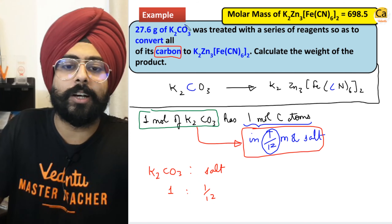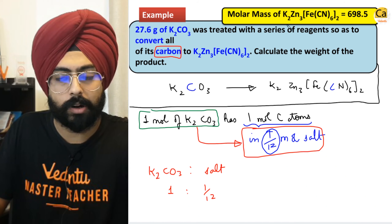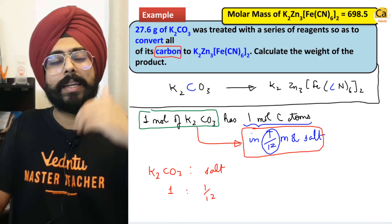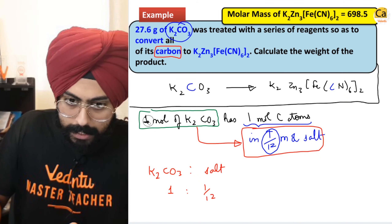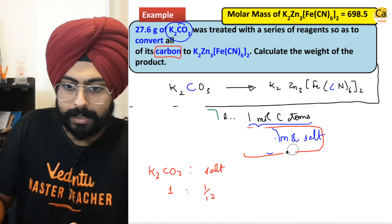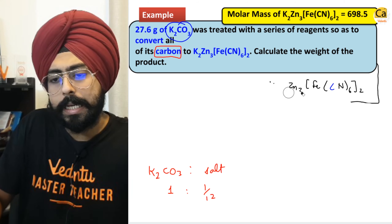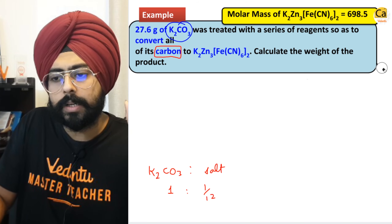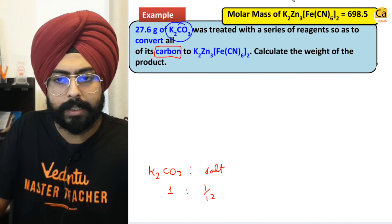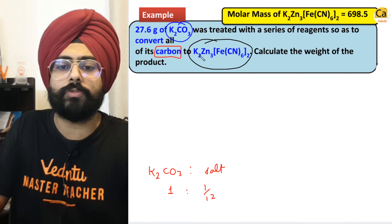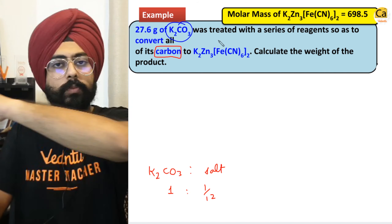The number of moles of K2CO3 that you have in the beginning — 1/12 of that will be the number of moles of this final product. One mole of K2CO3 has one mole of carbon; one mole of carbon can create 1/12 moles of this salt. Therefore one mole of K2CO3 will give rise to 1/12 of a mole of this salt.